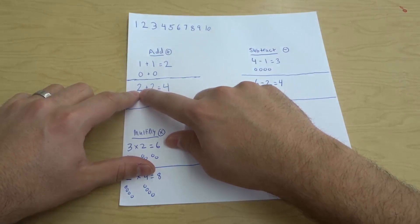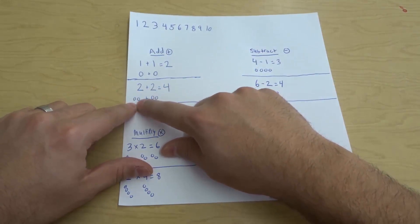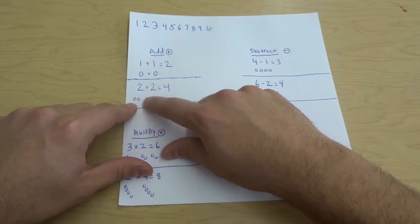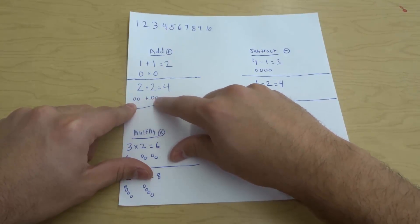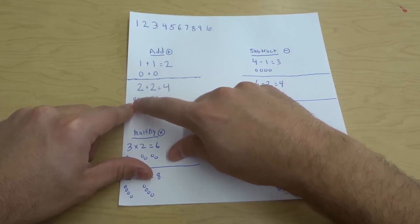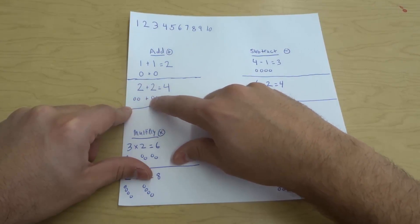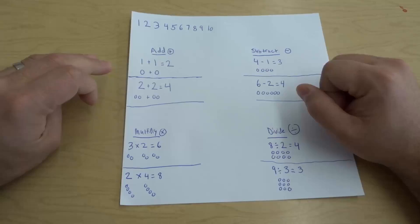Now here I have another one: 2 plus 2. So you can see I have 2 circles over here, and I'm bringing them together with 2 circles over here. 2 plus 2 equals 4, because 1, 2, 3, 4. We just count them all together.